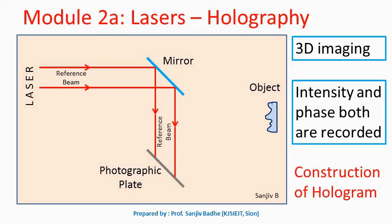To record this complete image, a broad laser beam is divided into two parts. One part is called the reference beam. This reference beam is made incident on a mirror, from where it is reflected and collected on the photographic plate. So the reference beam reaches the photographic plate directly after reflection from the mirror.